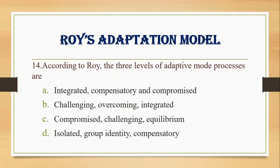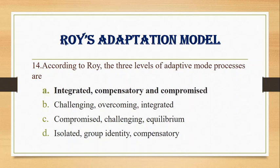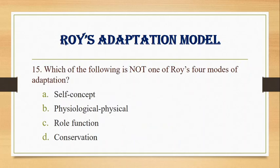Number 14. According to Roy, the three levels of adaptive mode processes are: A. Integrated, Compensatory, and Compromised, B. Challenging, Overcoming, Integrated, C. Compromised, Challenging, Equilibrium, D. Isolated, Group identity, Compensatory. Answer: A. Integrated, Compensatory, and Compromised. These are the three levels of adaptation according to Roy.